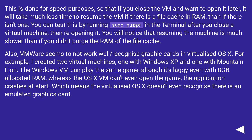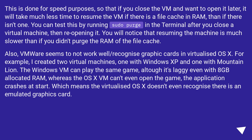VMware also seems to not work well or recognize graphic cards in virtualized OS X. For example, I created two virtual machines — one with Windows XP and one with Mountain Lion. The Windows VM can play a game, albeit laggy even with 8 GB of allocated RAM, whereas the OS X VM can't even open the game — the application crashes at start. This means virtualized OS X doesn't even recognize there is an emulated graphics card.